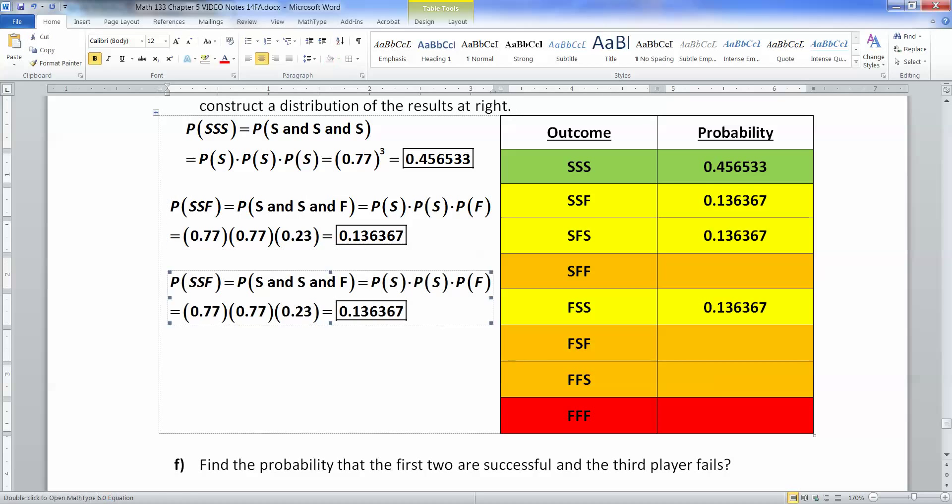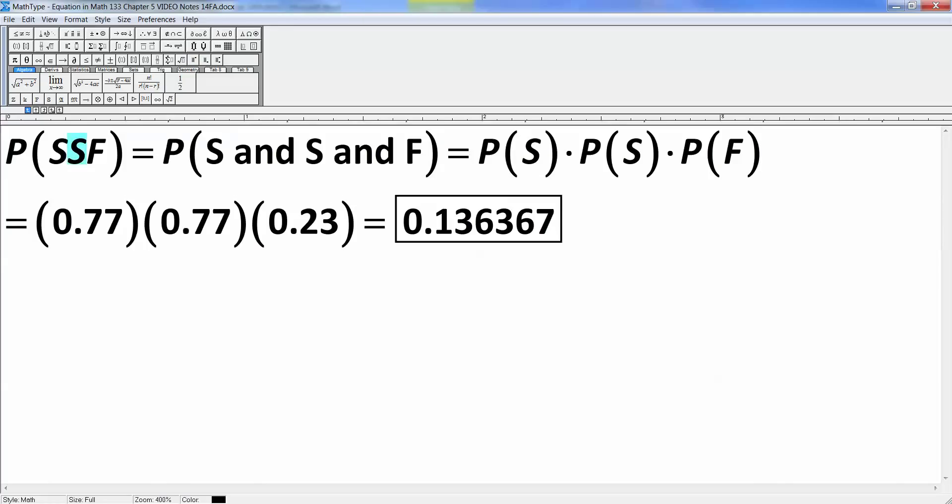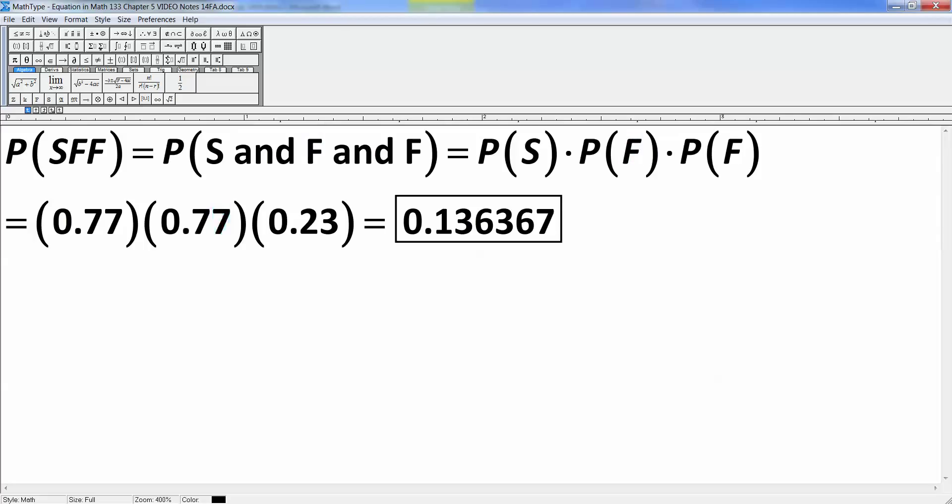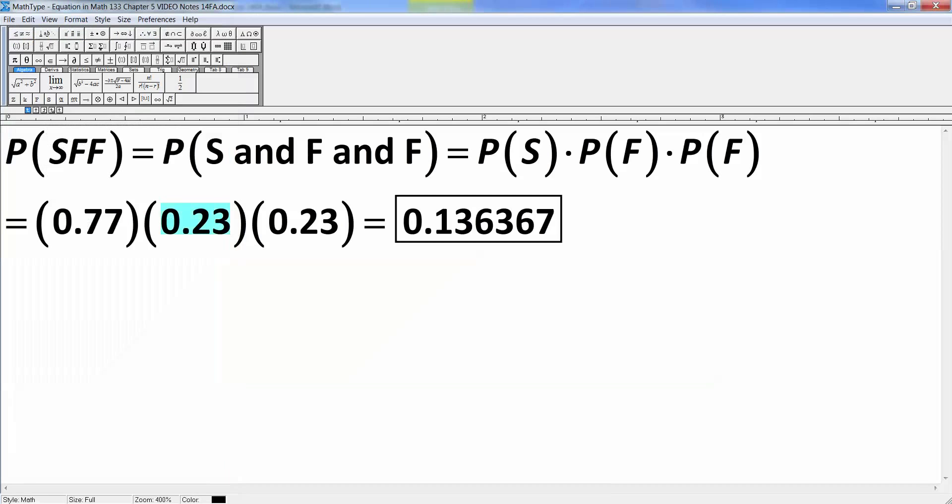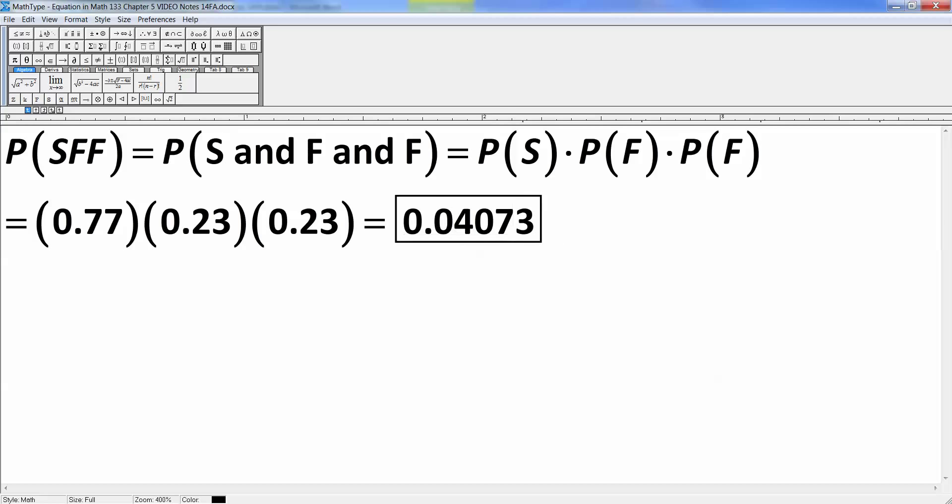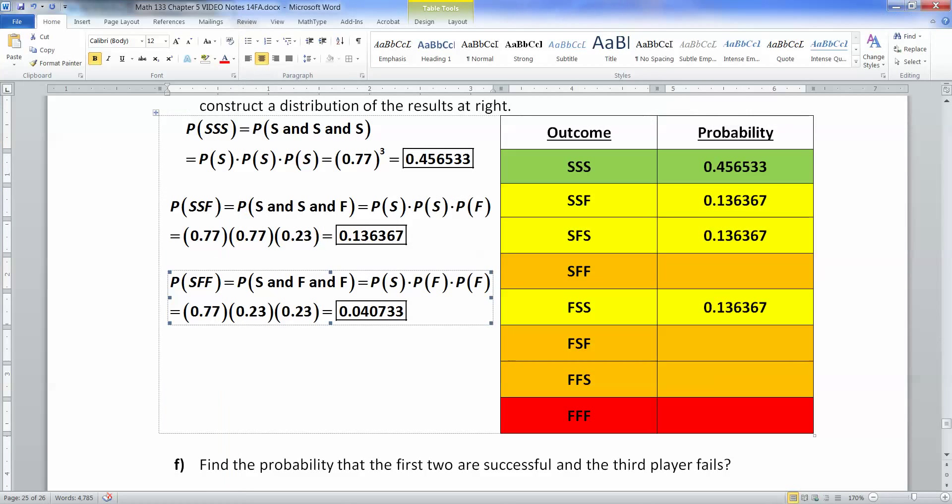Okay. So let's do success, fail, fail. So that means you want a success and a fail and a fail. So you want 0.77 times 0.23 times 0.23. And if you do that, 0.77 times 0.23 squared, that'd be 0.040733. All right. And that's this one. And once you have it here for this orange one, all these orange ones would be the same thing because they have two failures and one success.